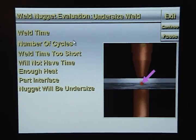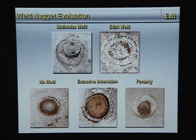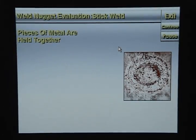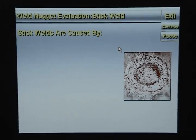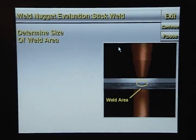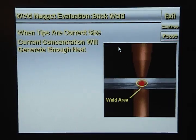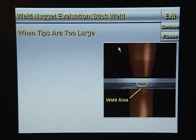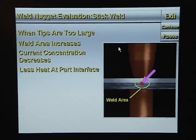A stick weld is when the pieces of metal are held together only by the melted surface coating of the metal. This will only occur when using coated metals. Stick welds are often caused by weld tips that are too large, low weld current, or short weld time. When weld tips are the correct size, the current concentration will generate enough heat to create a good weld nugget. When weld tips are too large, the current concentration decreases, so only the surface coating melts and you will get a stick weld.